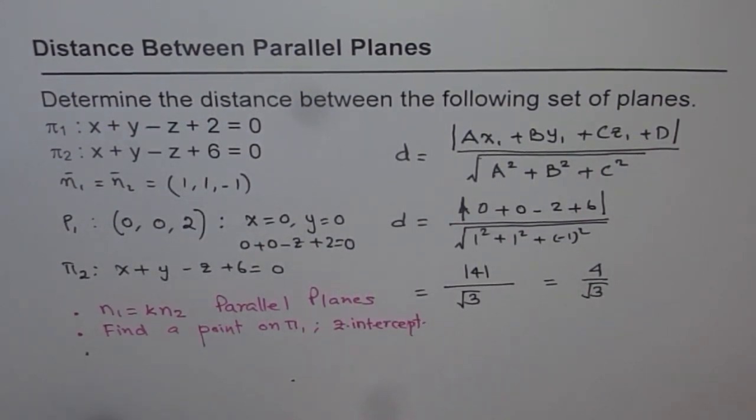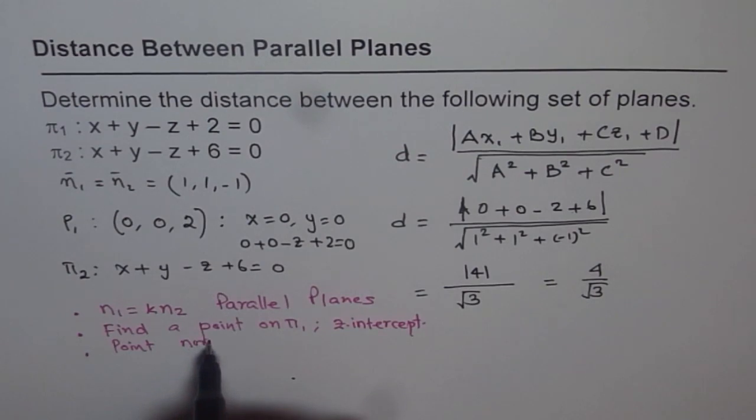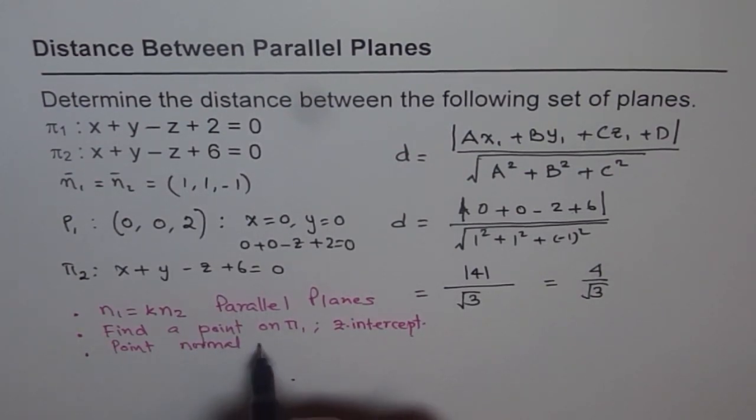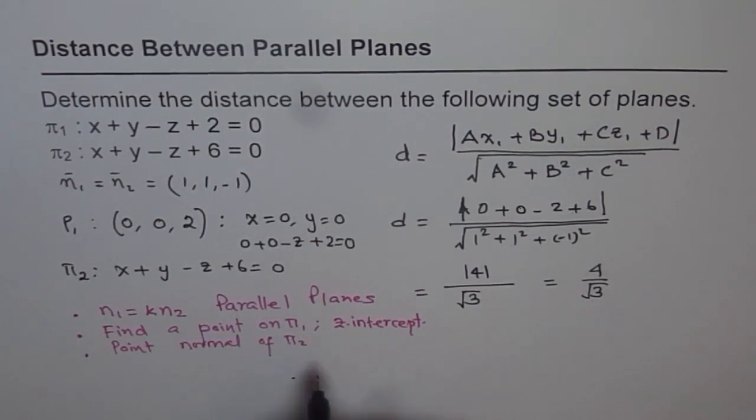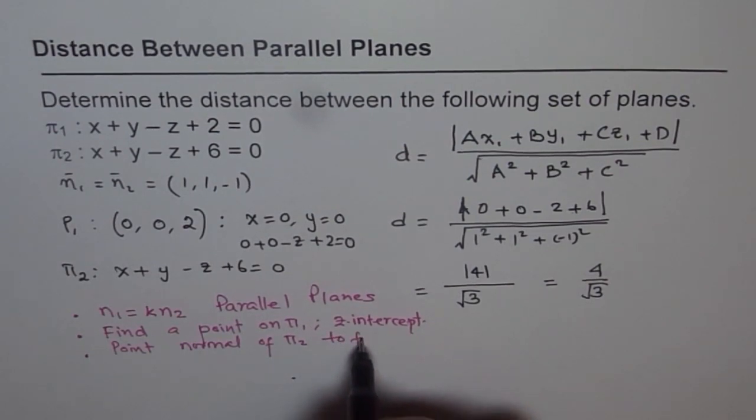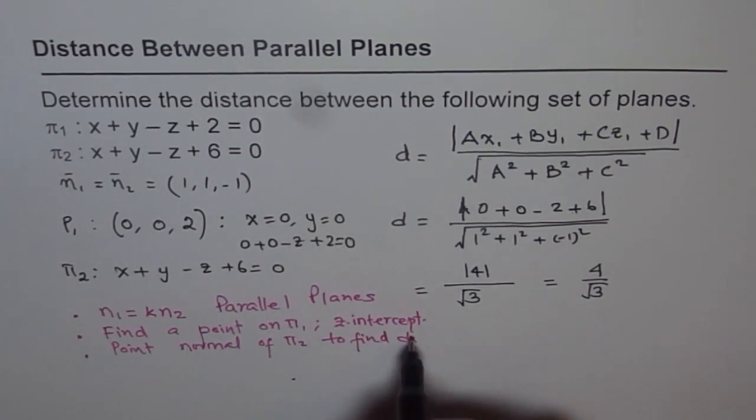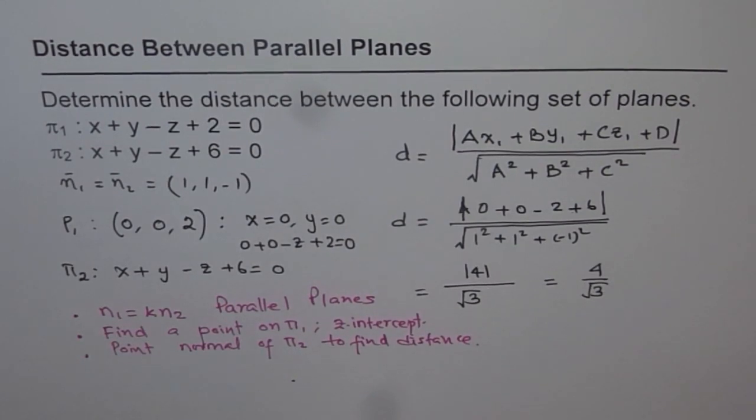Then use distance formula. Use point and normal of pi 2 to find distance. These are the three steps which you should follow to get your answer, the distance between parallel planes.